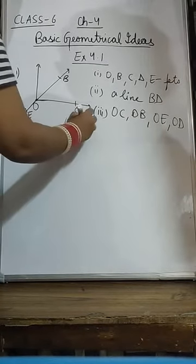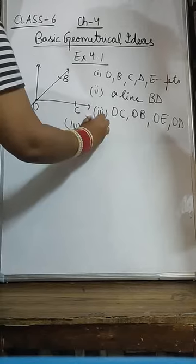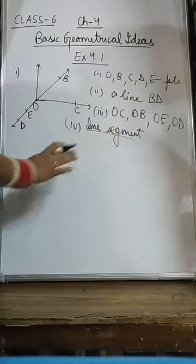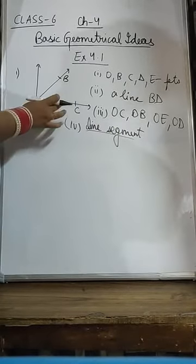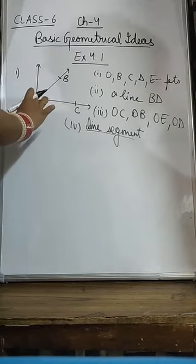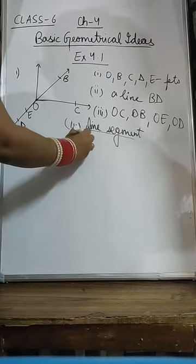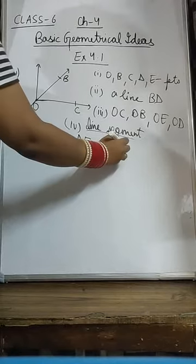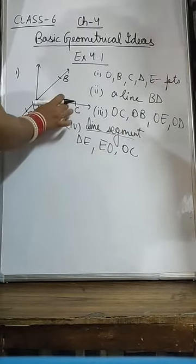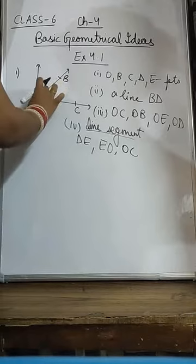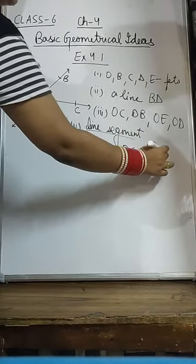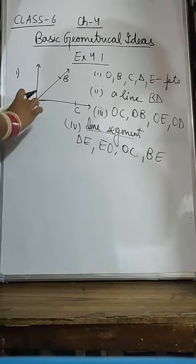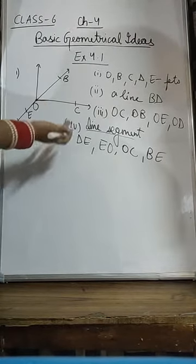In the fourth part we have line segments — that is the shortest distance. A line segment: you can see DE is a line segment, EO is again a line segment, BOC is again a line segment, and BE is again a line segment. But you can't say OE alone because it is extended. So you write it as EO or OE — it is your choice.